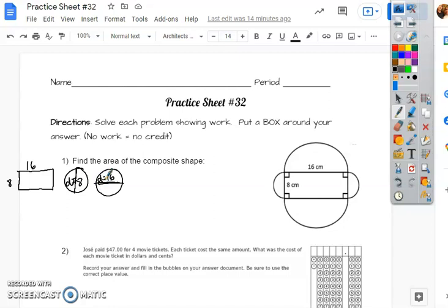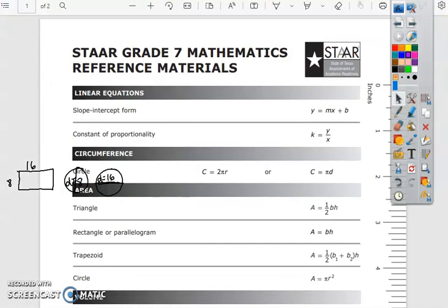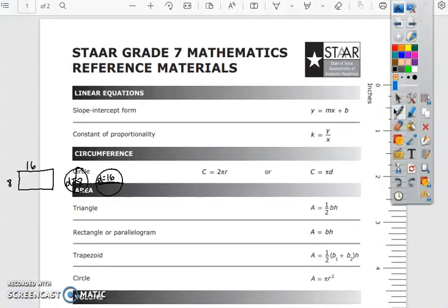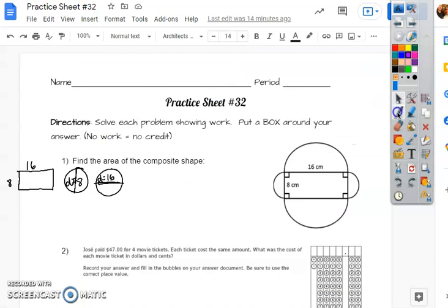So we're going to find two formulas, area of a rectangle, area of a circle. Some of you may already have it memorized. If not, we look at the formula chart. So area, rectangle, base times height, area, circle, pi r squared. So let's go back to the page, for this one, we're just going to do a equals b h. I'm going to let you do this part by yourself.